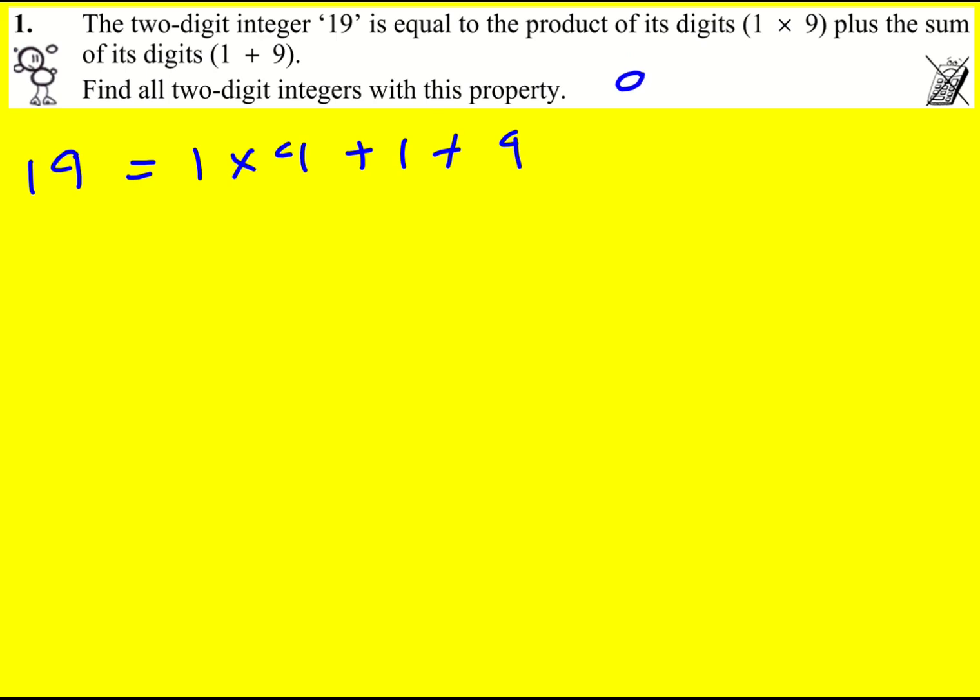They're going to be in the form AB, but we can write it in powers of 10 form as 10A plus B. Because for example, if I go with 38, then that would be 3 times 10 plus 8.